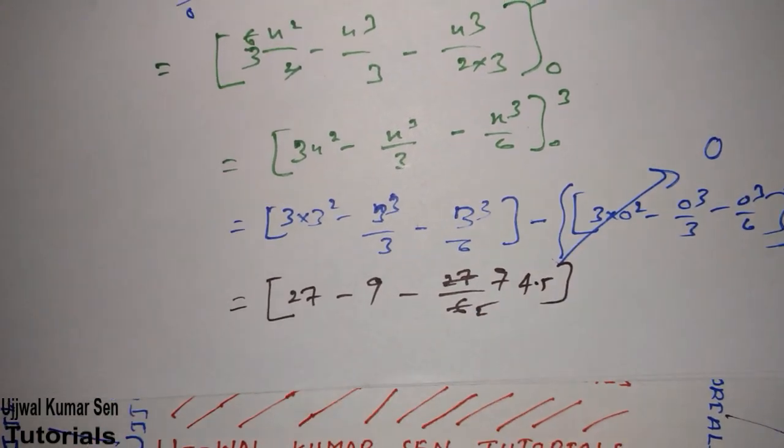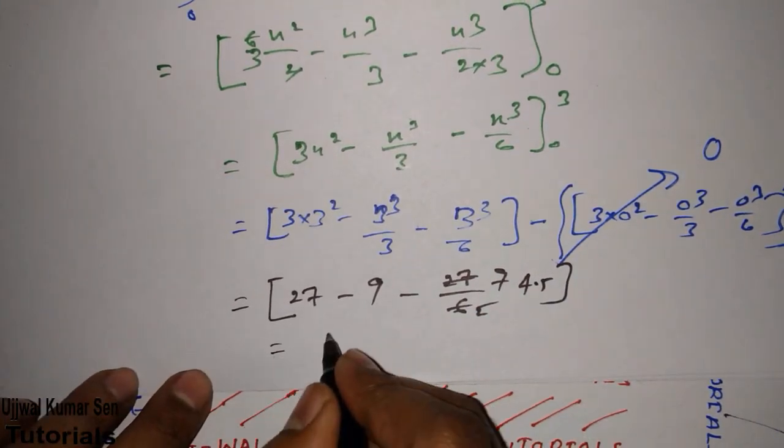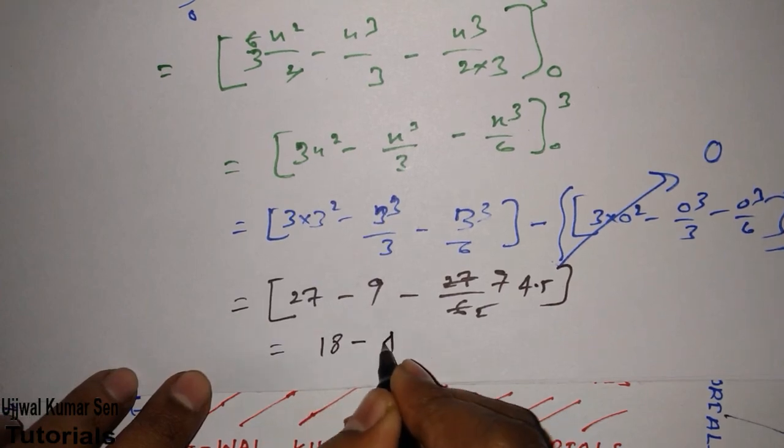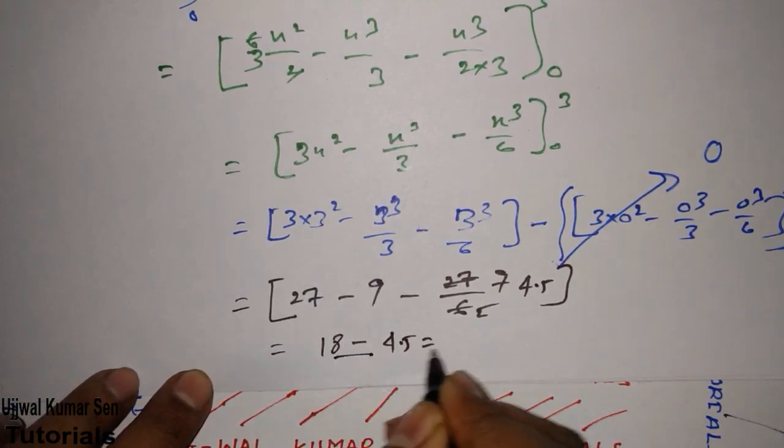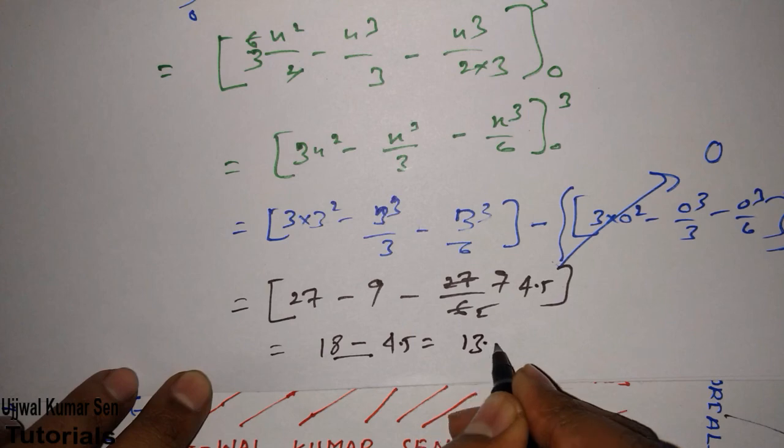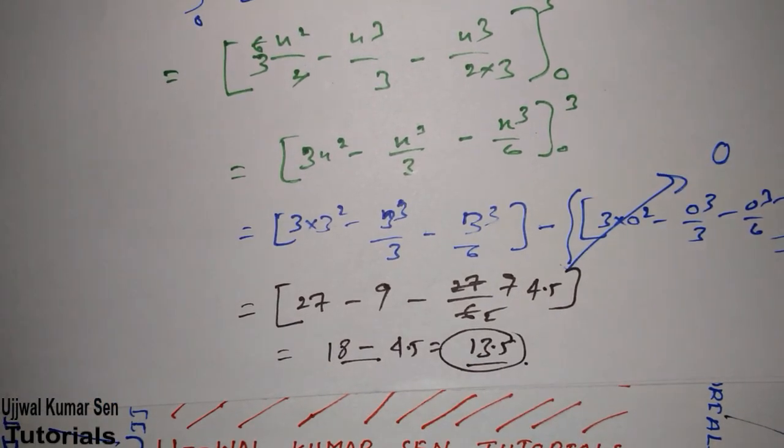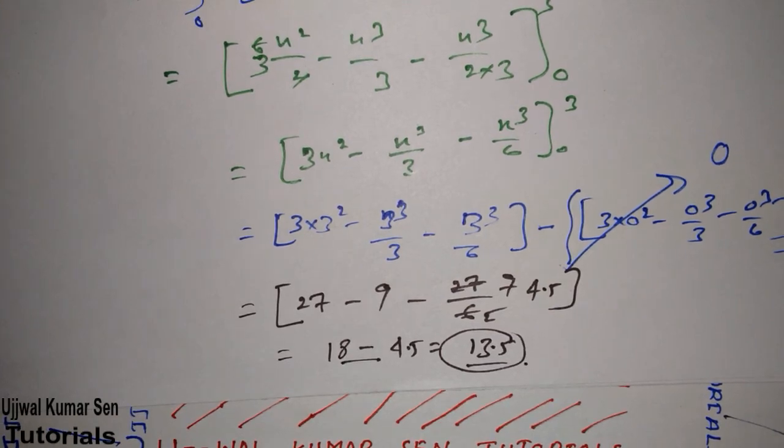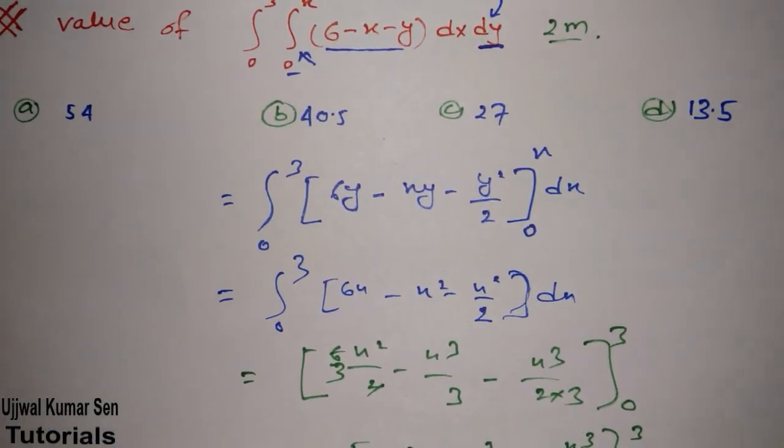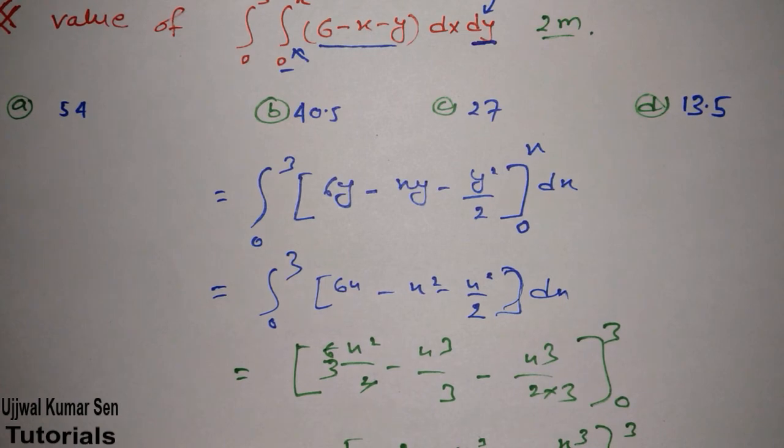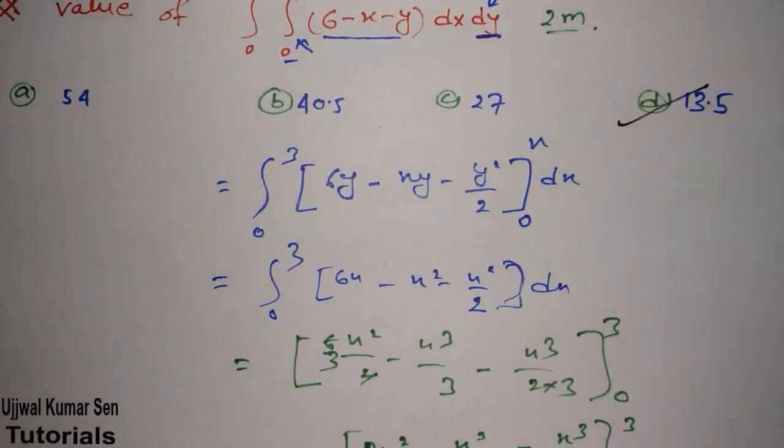Now we have to just calculate this to get the values. So this is how much we are getting? Basically 18 minus 4.5 that means 13.5. So what is the value we got from this question after solving? That is 13.5. Now look at the option we have given: 54, 40.5, 27, 13.5. So without thinking too much just mark the answer that is d, that is accurate answer for this question.